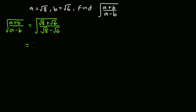what we can do is find the conjugate of the denominator and multiply the numerator and denominator by that conjugate. The conjugate is √8 + √6, so this will give us: